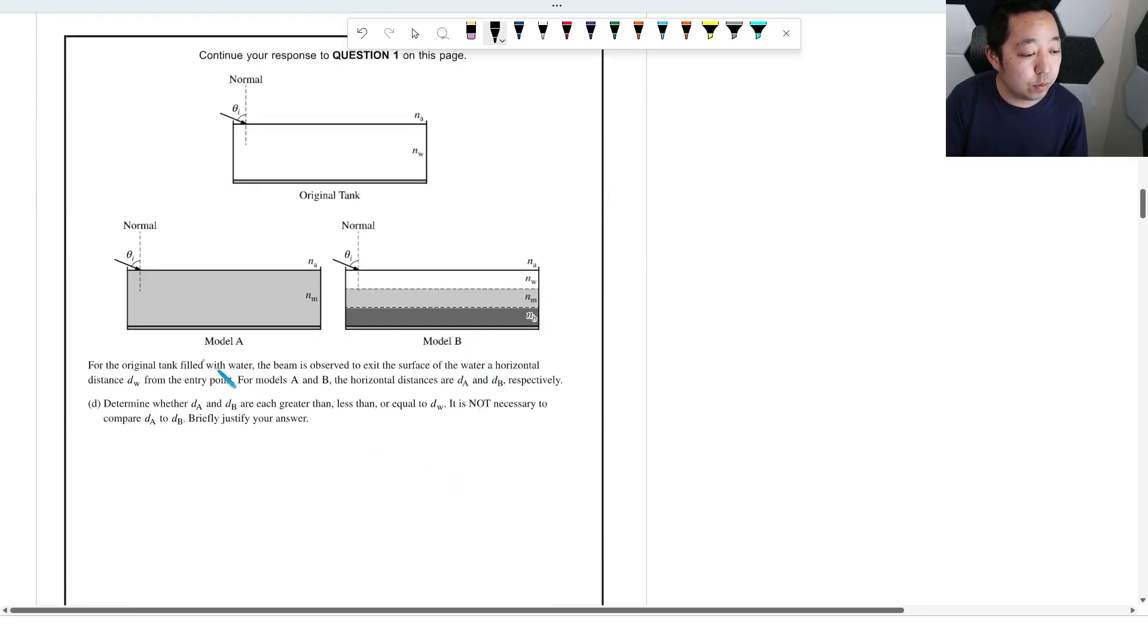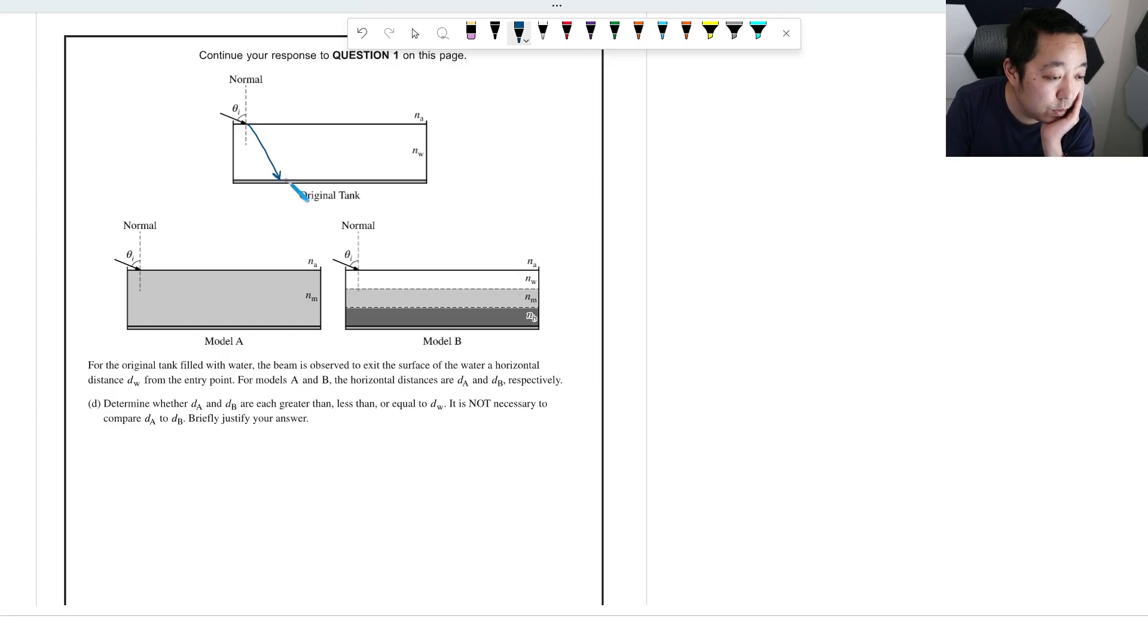All right. Now, for the original tank filled with water, the beam is also observed to exit the surface of water at a horizontal distance DW from the entry point. So there's a reflection down here. For models A and B, the horizontal distance are DA and DB. Determine whether DA and DB are greater than, less than, or equal. It's not necessary to compare DA and DB, just briefly justify your answer. So what happens here is we bend. And the reason we have one is we have a reflection here. This is theta R. And then this will reflect that theta R.